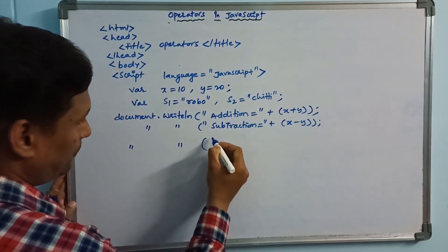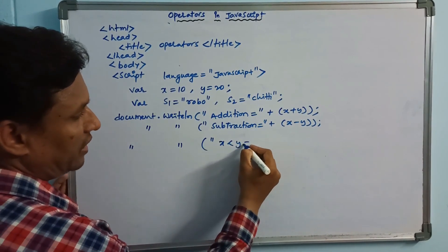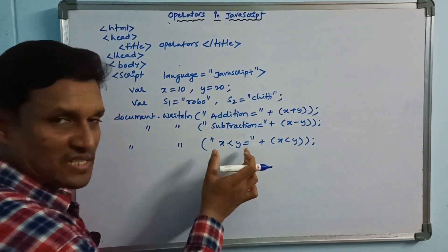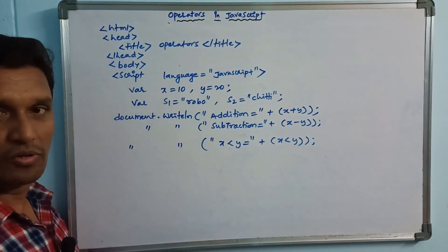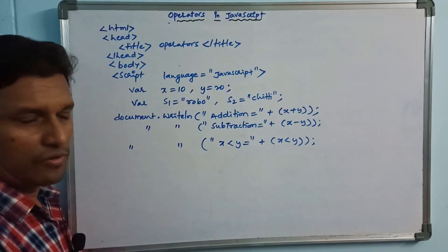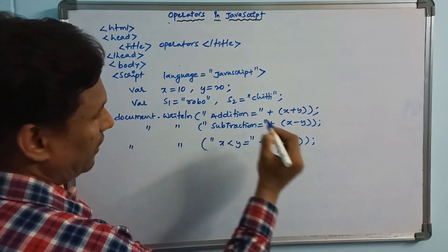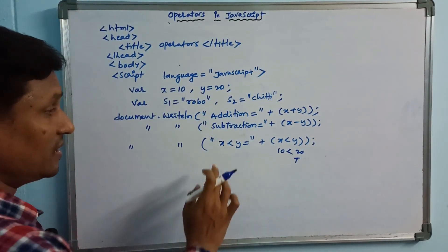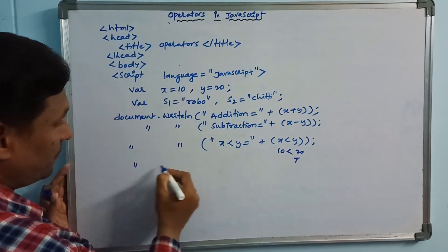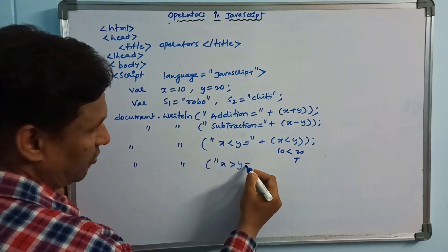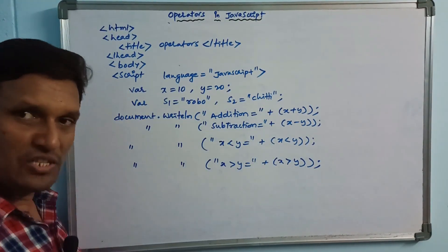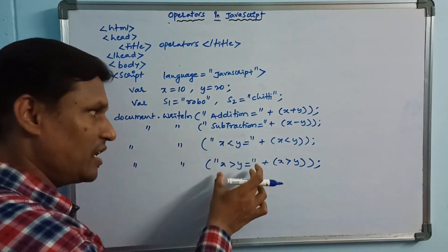For comparison operators, using document.write we print: x less than y equals plus x less than y in double quotes. So x less than y will print as a label, and the condition returns a boolean value. Since x is 10 and y is 20, the condition is true — output: x less than y equals true. Then x greater than y equals false, since 10 is not greater than 20.